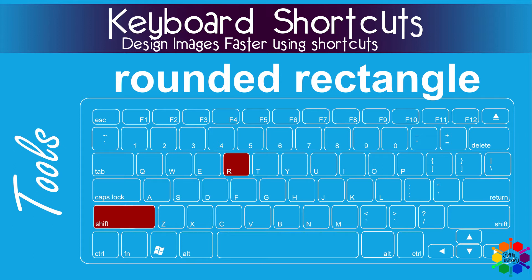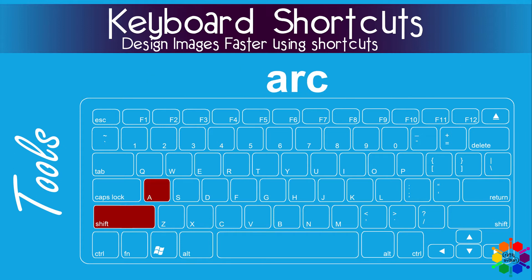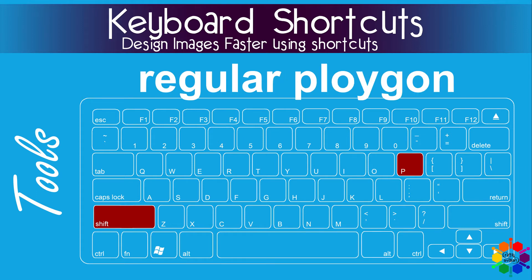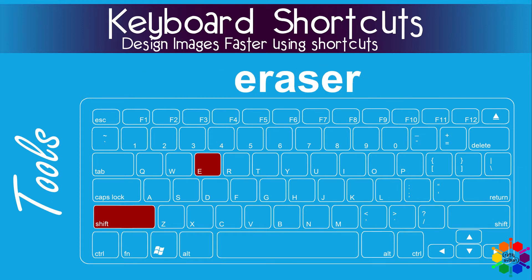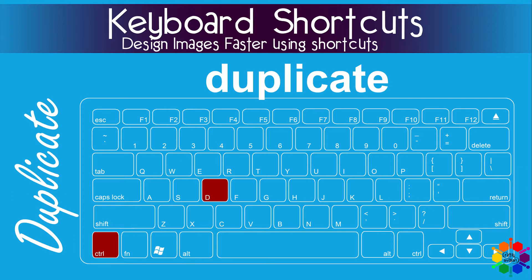The Tools menu. Rounded rectangle: Shift R. Smooth freehand: Shift F. Arc: Shift A. Regular polygon: Shift P. Eraser: Shift E. Weld: Ctrl Shift W.